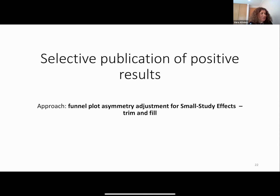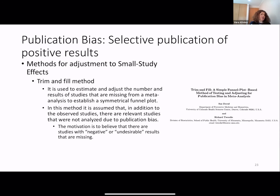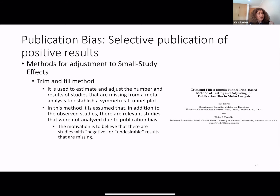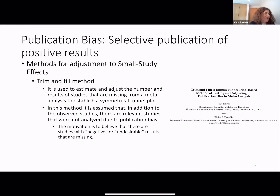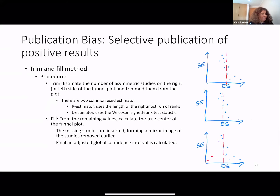Let's start with trim-and-fill. Trim-and-fill is used to estimate and adjust the number of results from studies that are missing from the meta-analysis to establish a symmetric funnel plot. It is assumed that in addition to the observed studies, there are relevant studies that were not analyzed due to publication bias. The motivation is to believe that there are studies with negative and undesirable results that are missing.